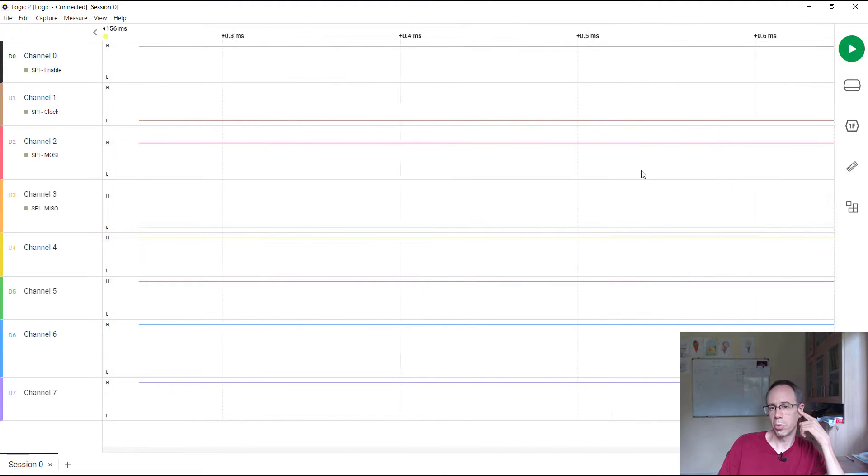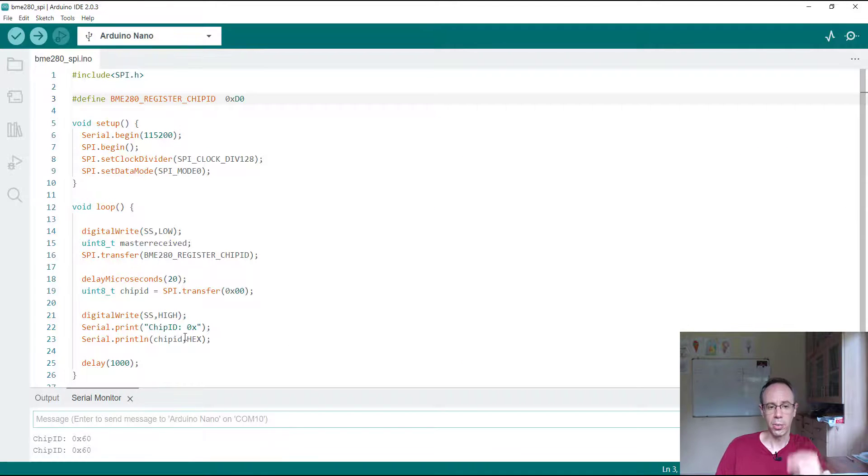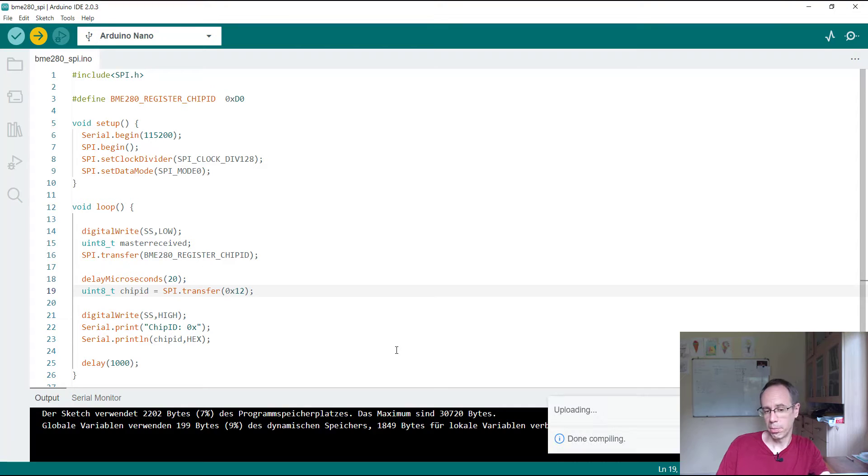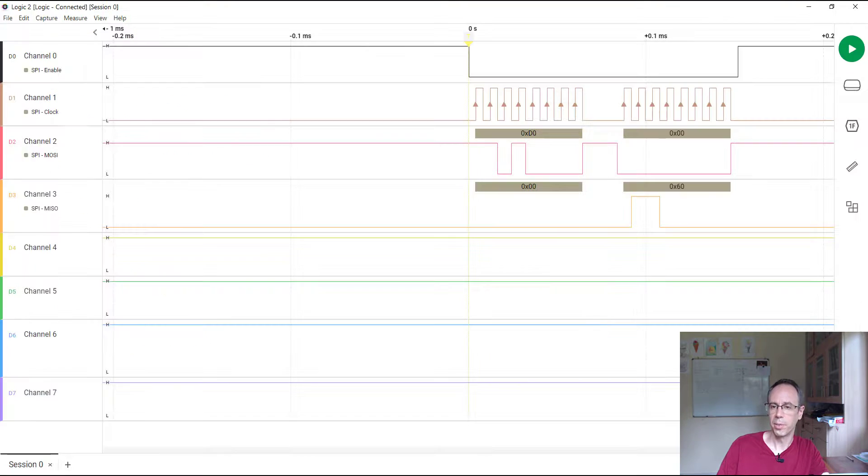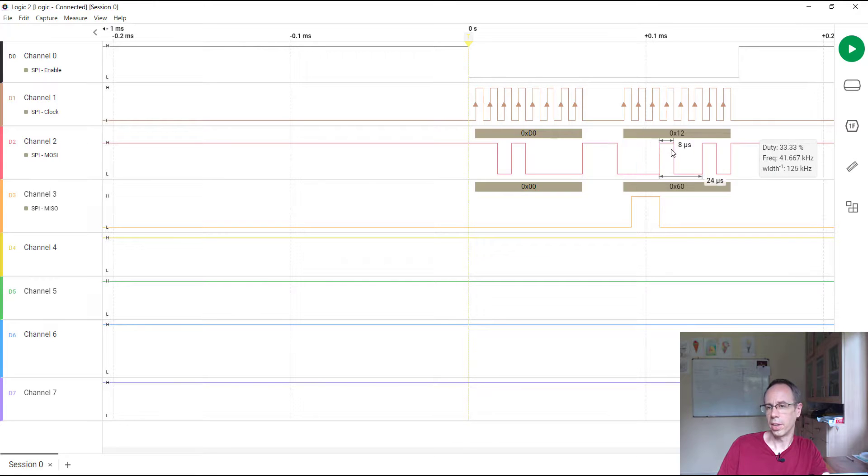In the logic analyzer when I capture the signal you see here our first byte is D0 on the PICO line, and on the POCI line we're getting at the second byte the 60 as answer. You're seeing here the clock signals and also our chip select line. You can see that it's really changing when I set the second byte for example to 12. It doesn't matter what second byte I'm sending in this case, we will still get the answer, but on the PICO line we're sending two bytes and the second byte is 12.